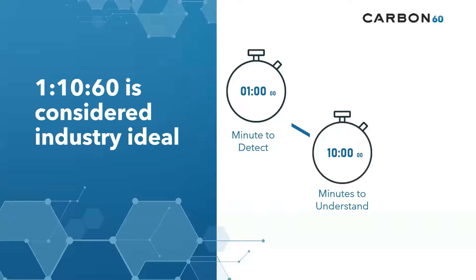The second pillar is 10 minutes to investigate. Once you know an intruder is there, you want to find out as much as possible quickly — 10 minutes is not a long time. The idea is that it's easier to stop someone when you know who they are and what they're trying to access on your network. This investigation is needed before you can move into containment and will also help prevent future targeting and attacks.